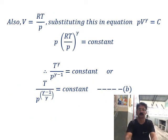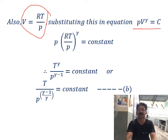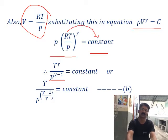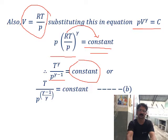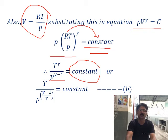Now suppose we substitute for V instead. V equals RT by P. Substituting in the adiabatic expression: P times (RT by P) to the power gamma equals constant. Opening the bracket gives T to the power gamma and P to the power gamma in the denominator with P in the numerator, so it becomes P to the power one minus gamma in denominator. Taking the gamma root of both sides, we get T by P to the power (gamma minus one by gamma) equals constant.